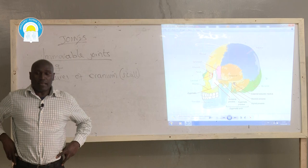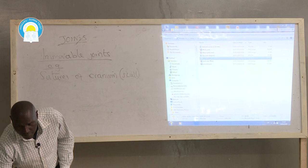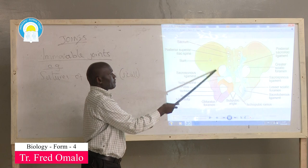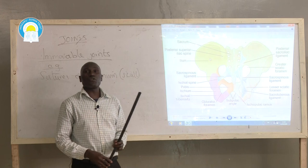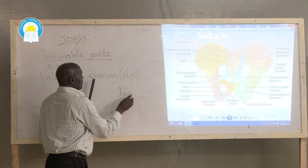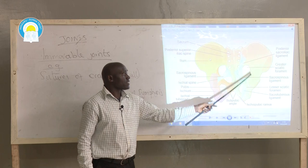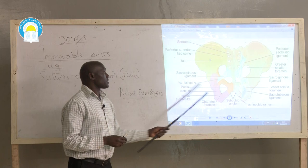Another immovable joint is found in the pelvic girdle, the bone found in the waist. The pelvic girdle is made up of two halves — one on the left side and another on the right. These two halves are joined at a specific point known as the pubis symphysis. At the pubis symphysis, there is no movement, so we call it an immovable joint.